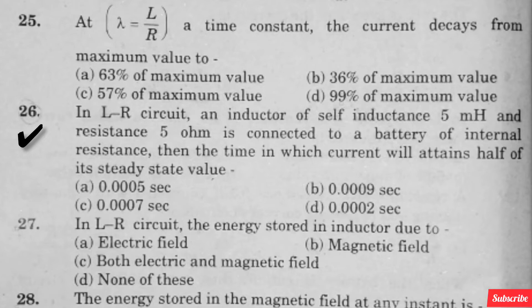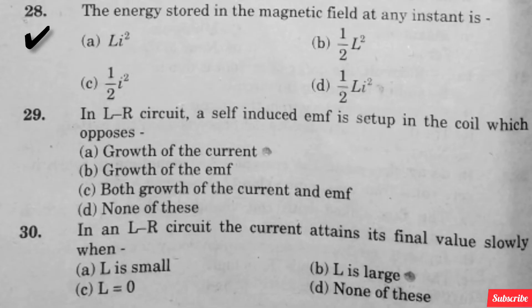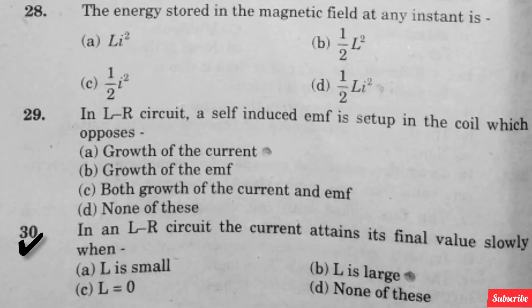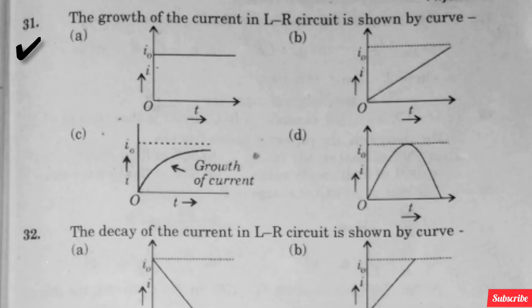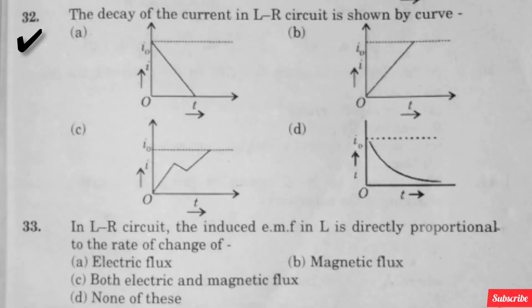In LR circuit, an inductor of self-inductance 5 mH and resistance 5 ohm is connected to a battery. The time in which current attains half of its steady state value — option is right. The energy stored in inductor — option B is right. The energy stored in magnetic field at an instant — option D is right. In LR circuit, a self-induced EMF is set up in the coil which opposes — option A is right. This current attains its final value slowly when — option B is right. The growth of current in LR circuit is shown by — option C is right. The decay of current in LR circuit is shown by curve — option D is right. In LR circuit, the induced EMF L is directly proportional to the rate of change of — option B is right.